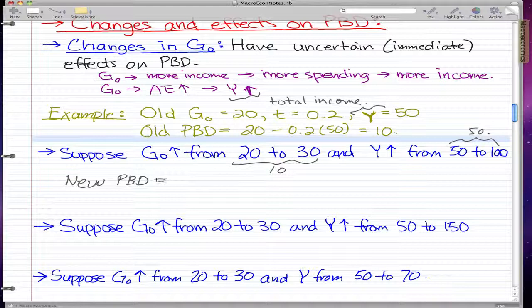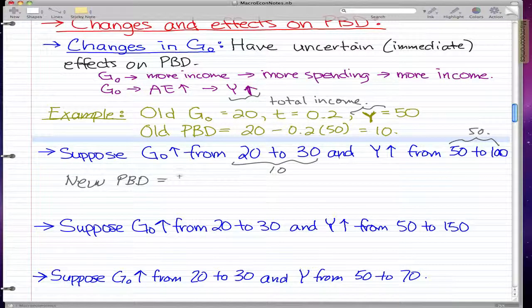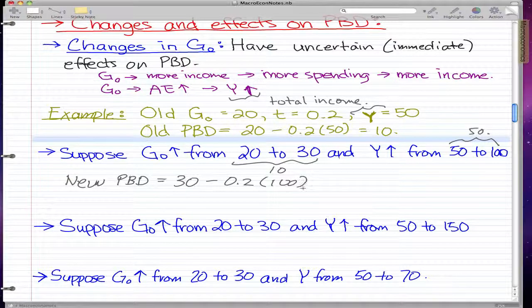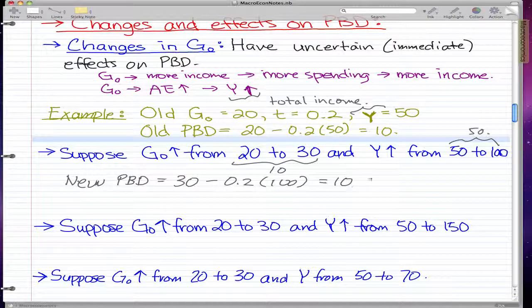Let's calculate our new primary budget deficit. The new government spending is 30 minus the tax rate which stayed the same at 20%, times the new total income which is 100. That is essentially 30 minus 20, so we get 10. The new primary budget deficit is 10, so the primary budget deficit stayed the same.